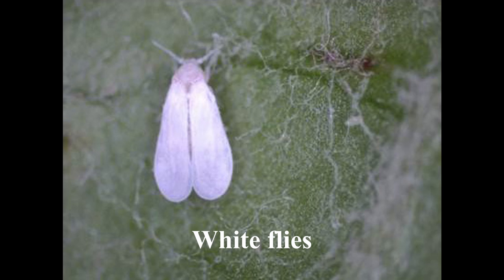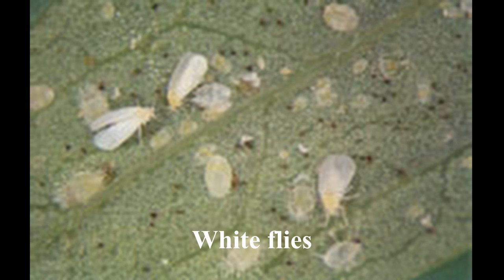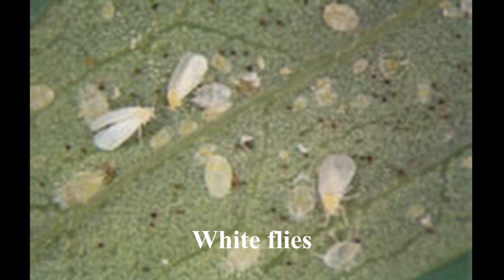Both mealybugs and brown scale insects appear as cushion-like masses that can be scraped off with your fingernails. Another noticeable pest is whiteflies — a small white-colored flying insect that feeds mainly on the underside of leaves. They are most easily observed when the leaves are suddenly shaken or disturbed. They will fly around briefly before returning to the plant to continue feeding. Whiteflies also excrete the sticky substance called honeydew.